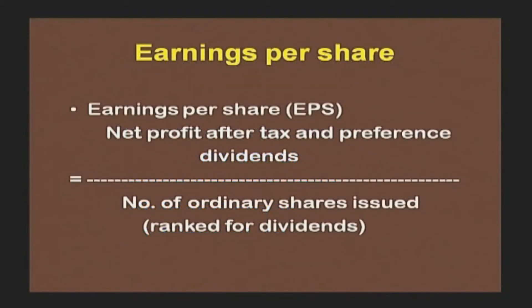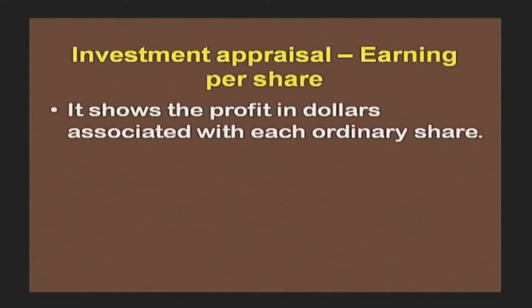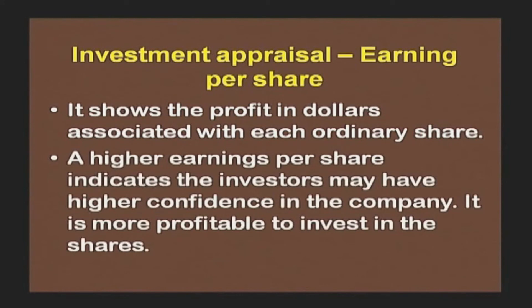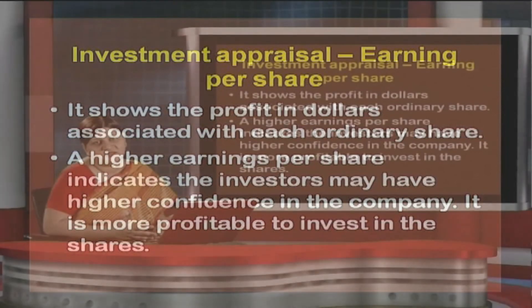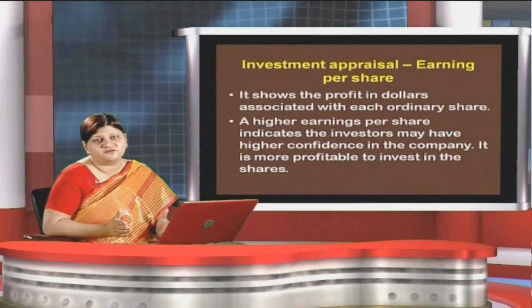Let us highlight these formulas again in detail. EPS is computed as net profit after tax and preference dividend divided by number of ordinary shares issued and ranking for dividends. It shows the profits associated with each ordinary share — the amount of money or rupee per share. A higher EPS indicates investors may have higher confidence in the company, and it is more profitable to invest in the shares.